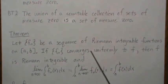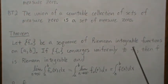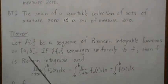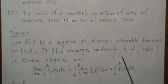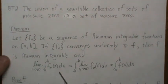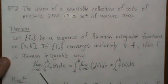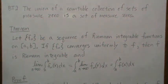Let f_n be a sequence of Riemann integrable functions on [a,b]. If the f_n converges uniformly to f, then f is Riemann integrable and we can pass this limit through the integration sign.